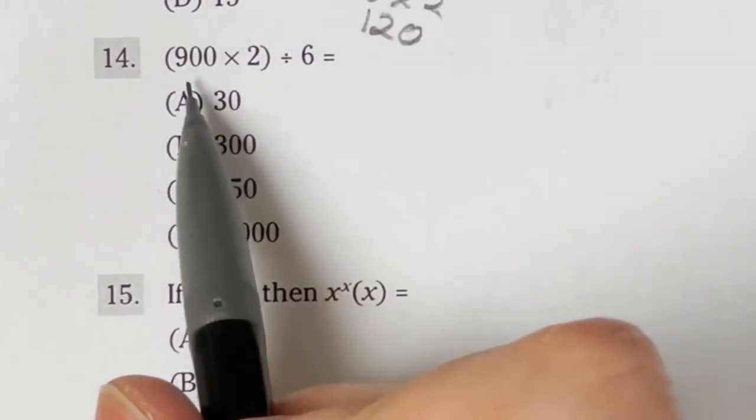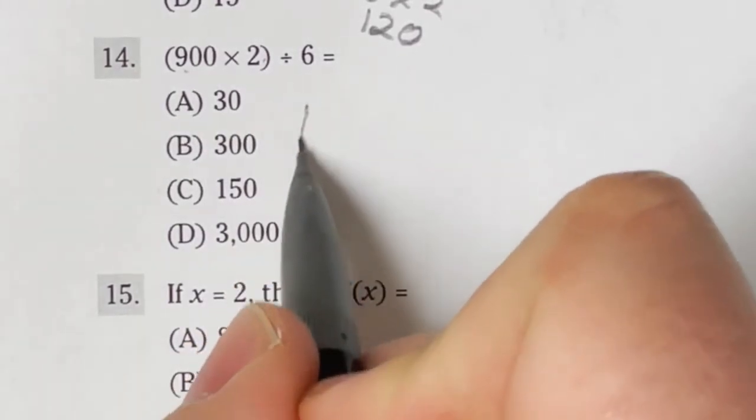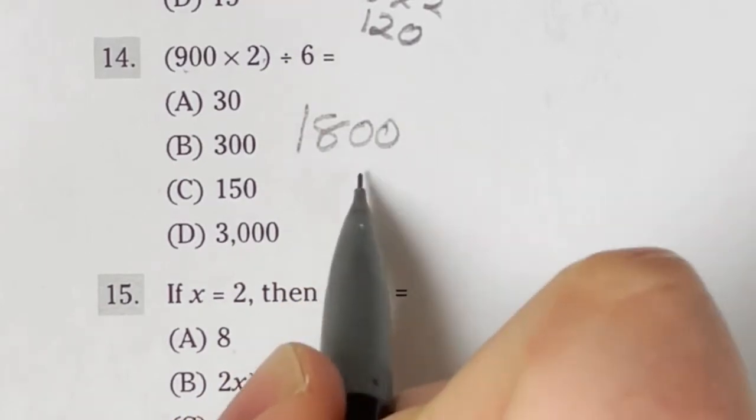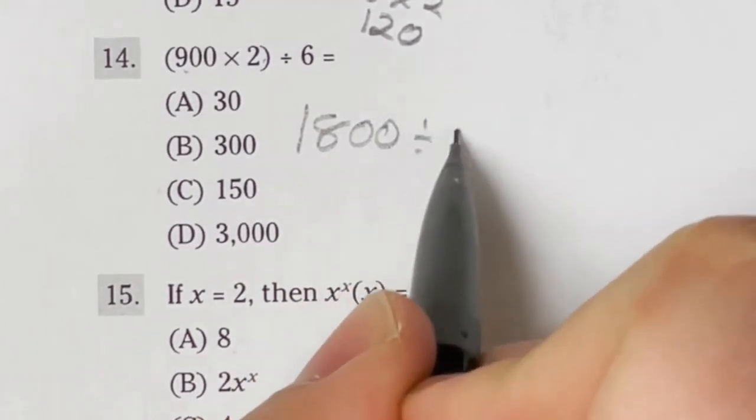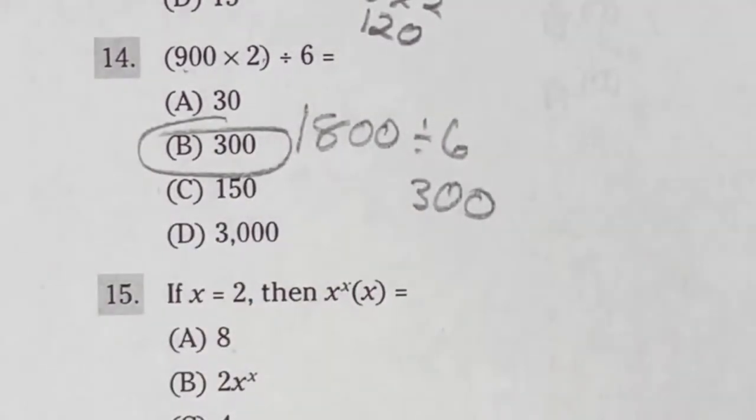Number 14 on the ASVAB is just some quick math here. 900 times 2 is going to give me 1,800. Then we have to divide that by 6. Well, 6 goes into 18 three times. And then we have those two zeros, meaning our final answer here is B.